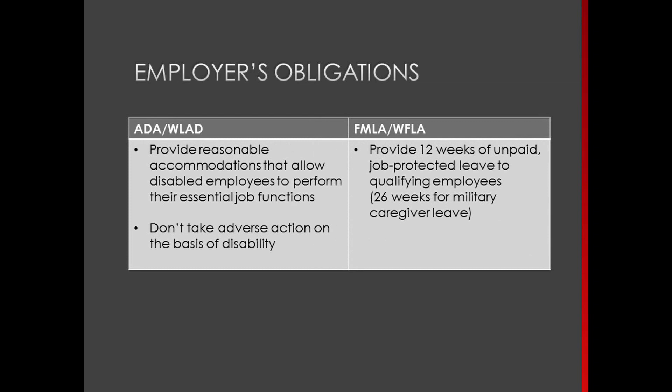Here's the 30,000-foot overview of obligations. The disability discrimination laws primarily apply to the employee's own health. They say: one, if you have an employee with a disability, you have to provide them with a reasonable accommodation that will allow them to perform the essential functions of their job; and two, you can't take adverse action on the basis of somebody's disability — that means firing, failing to promote them, schedule changes, or less desirable assignments. The FMLA is simpler and narrower: it requires you to provide 12 weeks of unpaid job-protected leave, or 26 weeks for certain military caregiver leave.